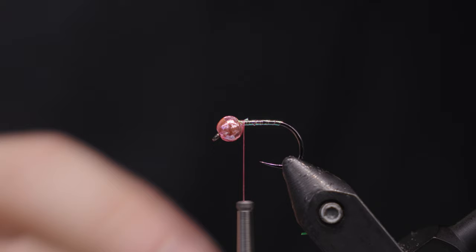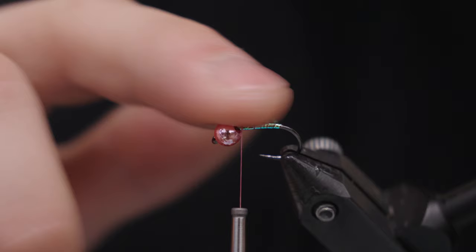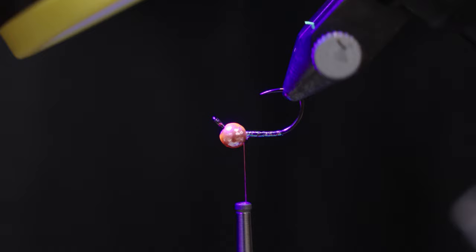We're going to take just a little bit of Solarez Bone Dry right here, just enough to coat this. You don't want too much extra, so I'm just going to spread it around a little bit. If you need to take your paper towel and dab any excess off, you can. We don't need a lot.